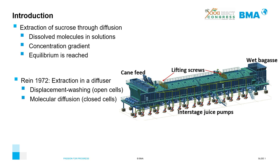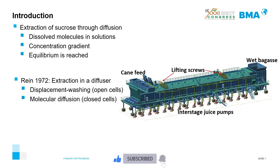Ryan in 1972 proposed that extraction in a diffuser occurs via two simultaneously occurring processes. In the first process, the juice available in open cells is extracted through a displacement washing process. In the second, the juice available in closed cells is extracted through a molecular diffusion process. Ryan proposed that the displacement washing process is much faster than the molecular diffusion process.